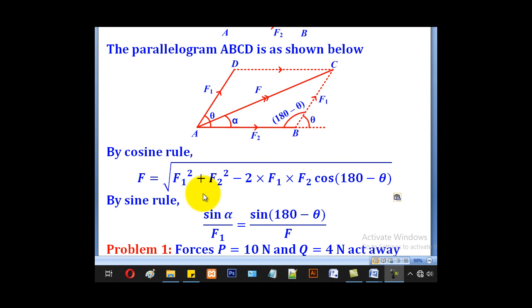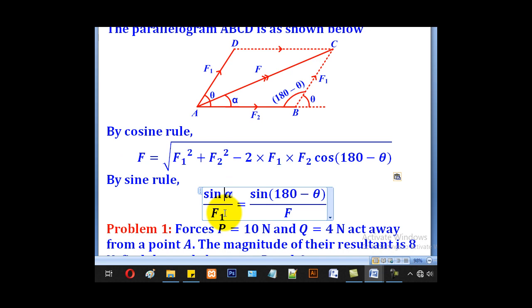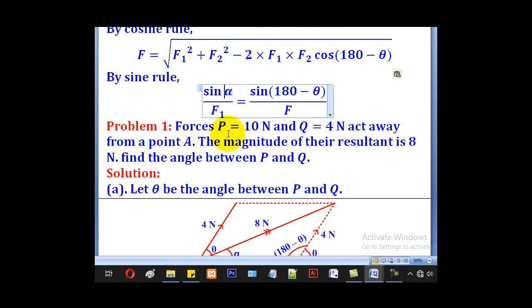Then by sine rule, we shall say sine alpha over F1 will be equal to sine 180 over F. With that, since this is known, this is known and this is also known, alpha can be got which will be the direction of the resultant of the two forces F1 and F2.